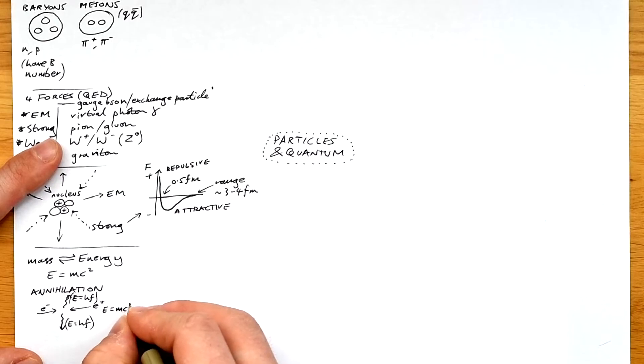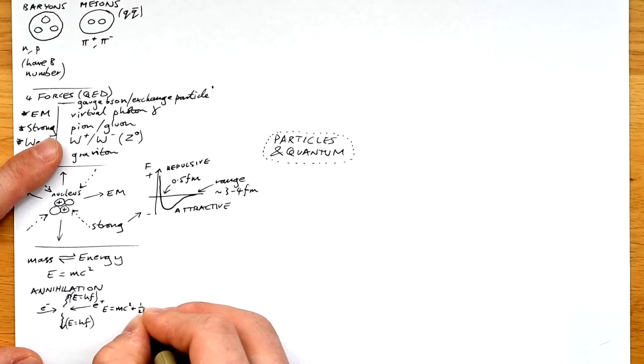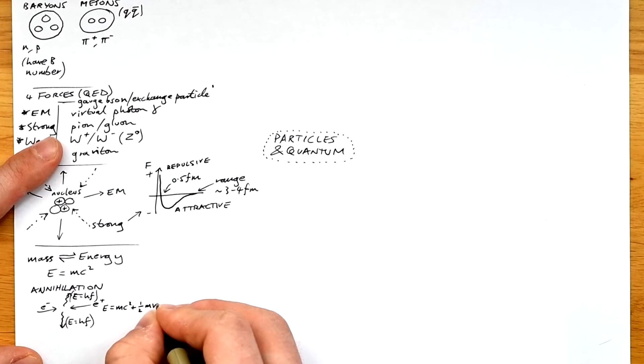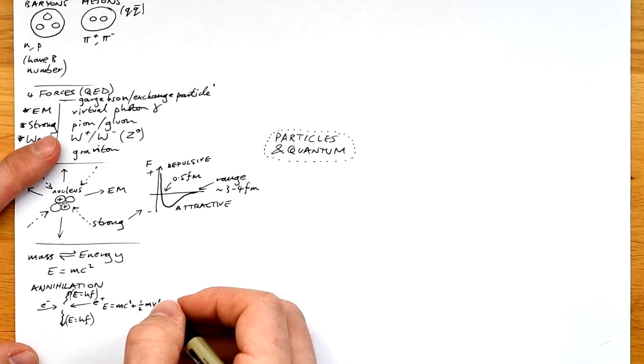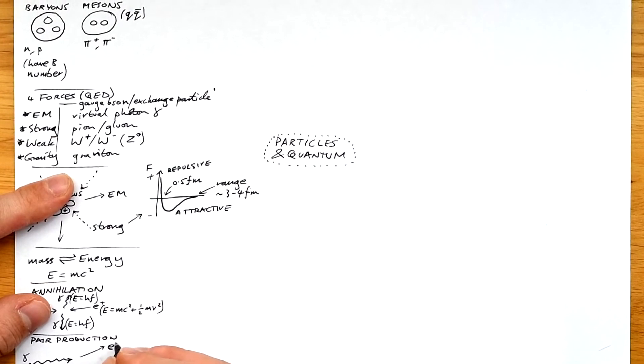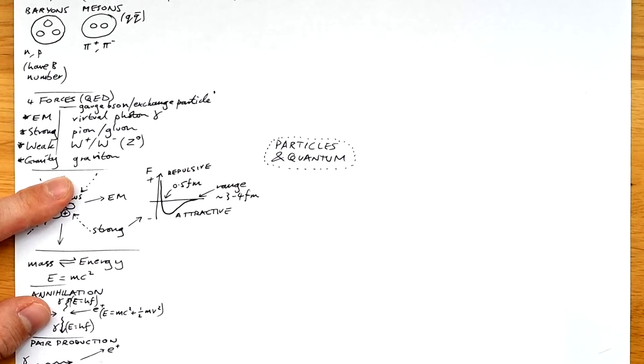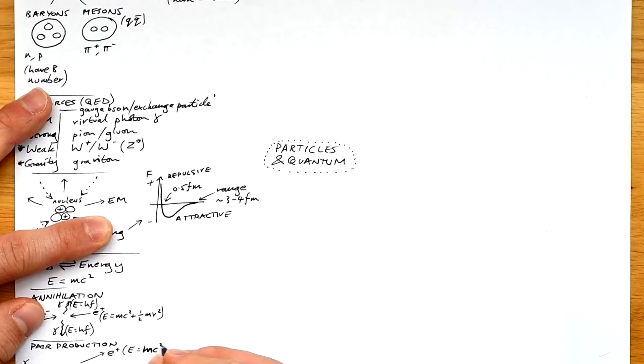So we can say that E equals mc squared plus half mv squared. That's the kinetic energy of the particles going in. And we have two lots of HF coming out. The opposite is pair production. That's when a photon turns into two particles. Again, a particle and its corresponding antiparticle.